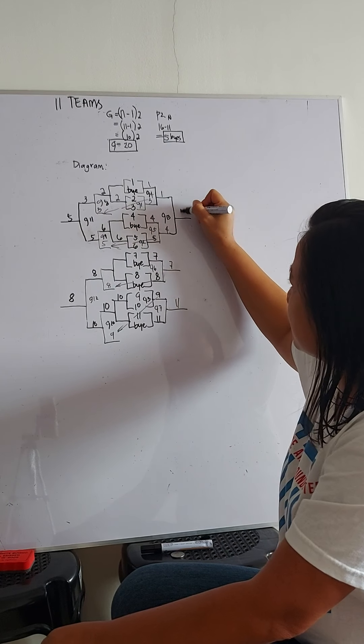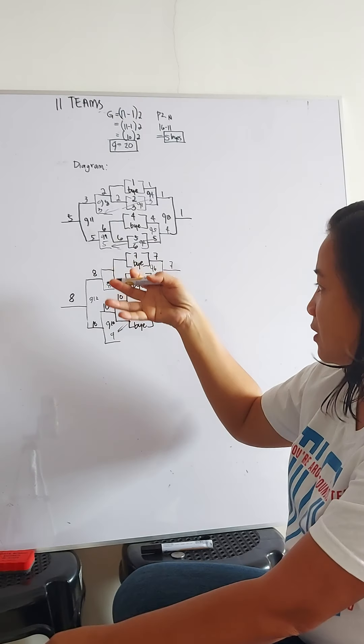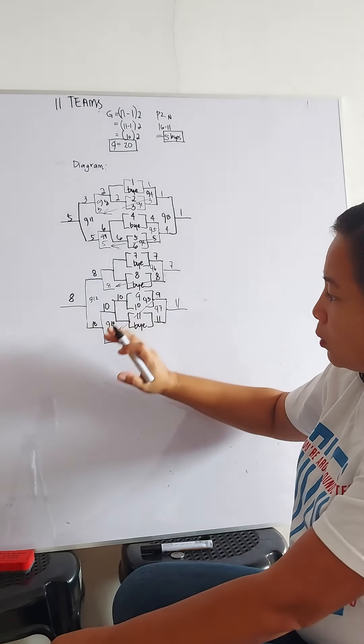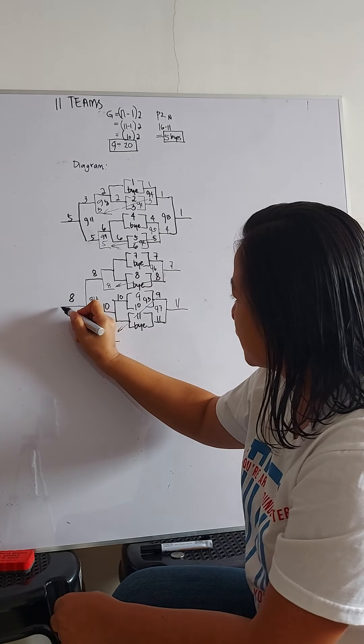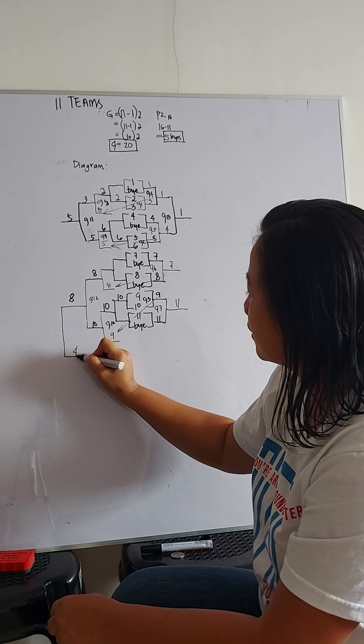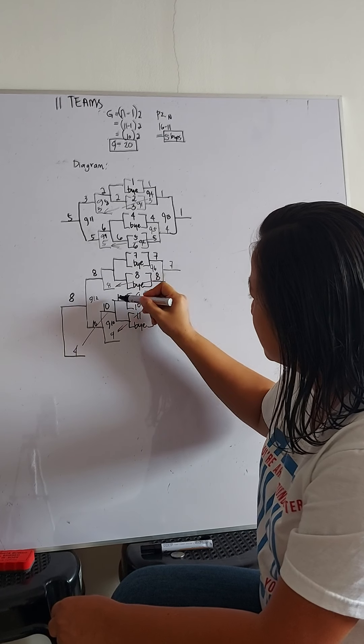Game 13. Team 1. So, in this case, we can do the enter cross or interchange of the loser from the upper to the lower or vice versa. So, let's open or hang it. That's for team 4.